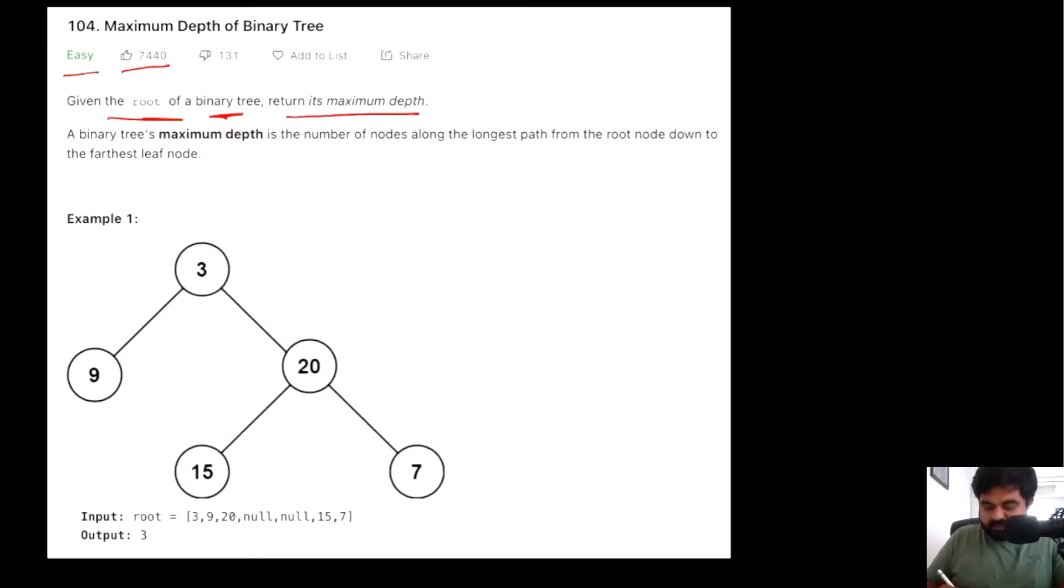We are also given the definition of what a maximum depth is. It is basically the number of nodes along the longest path from the root node down towards the farthest leaf node. That is the depth of the tree.